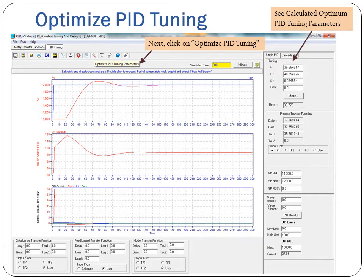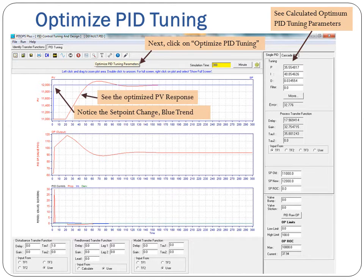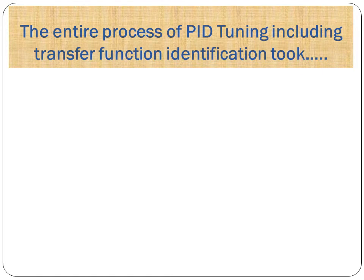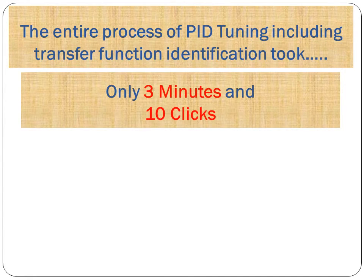See the calculated optimum PID tuning parameters. Notice the setpoint change blue trend and see the optimized PV response. Examine the AC PID OP output trajectory. The entire process of PID tuning, including transfer function identification, took only 3 minutes and 10 clicks.